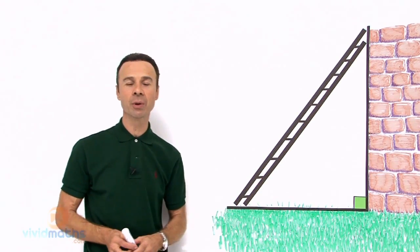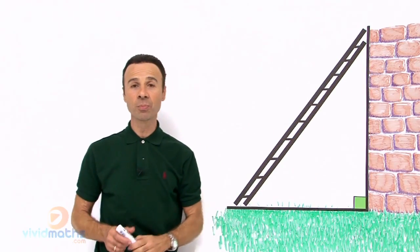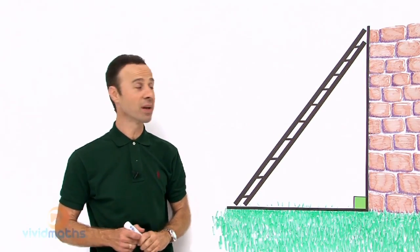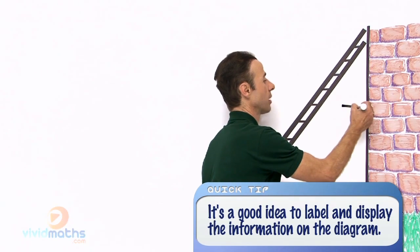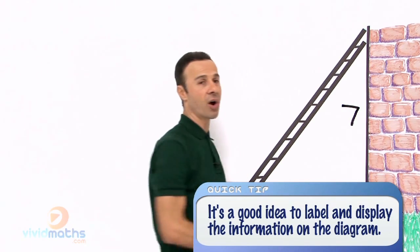So let's have a look at this diagram. First of all we have a brick wall here and the vertical height, the measurement of that wall to the top of the ladder, is given in the problem as 7 meters. So let's label it right there: 7 meters, that is the height.